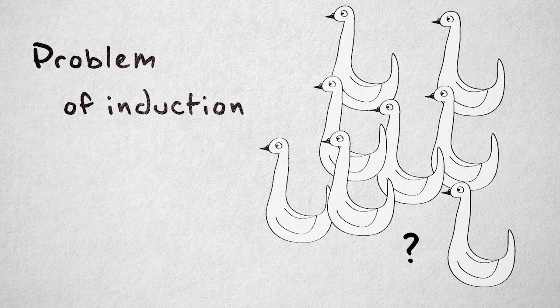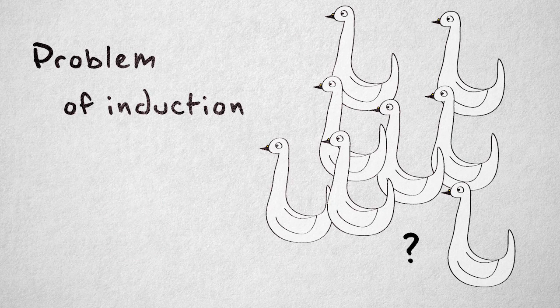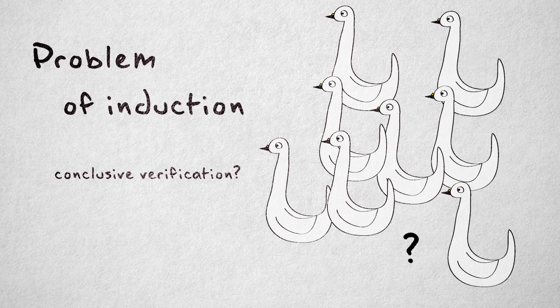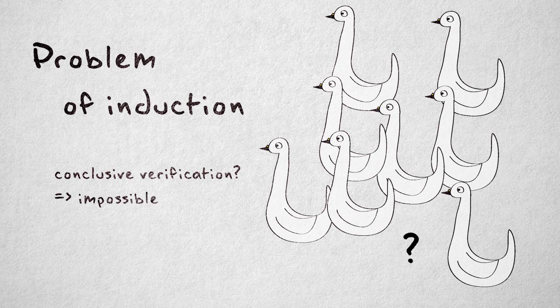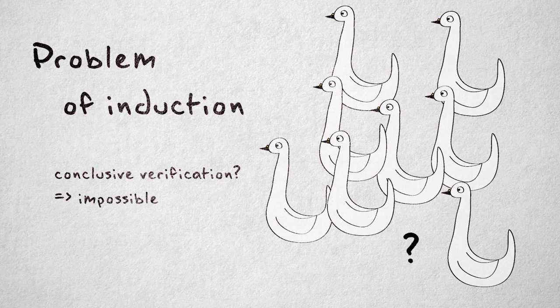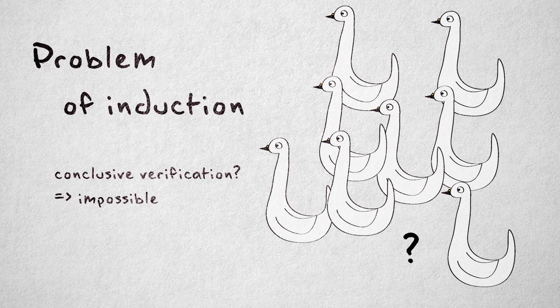In other words, no amount of confirmatory observation can ever conclusively show that a scientific statement about the world is true. So if you require that all knowledge must be based on observations alone, that means you can never be sure you know anything.